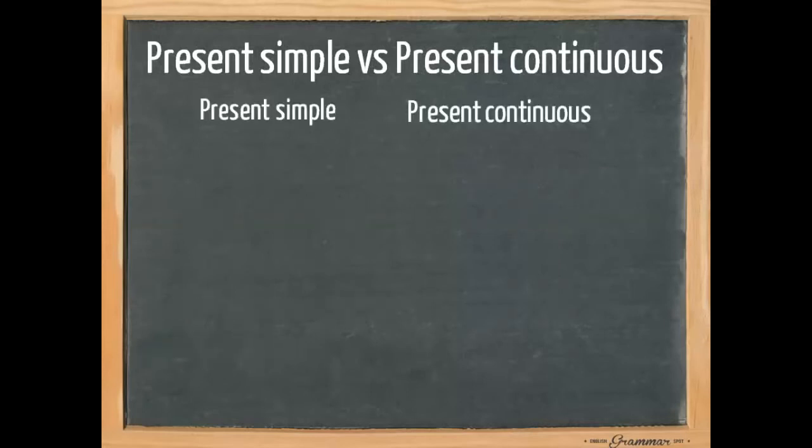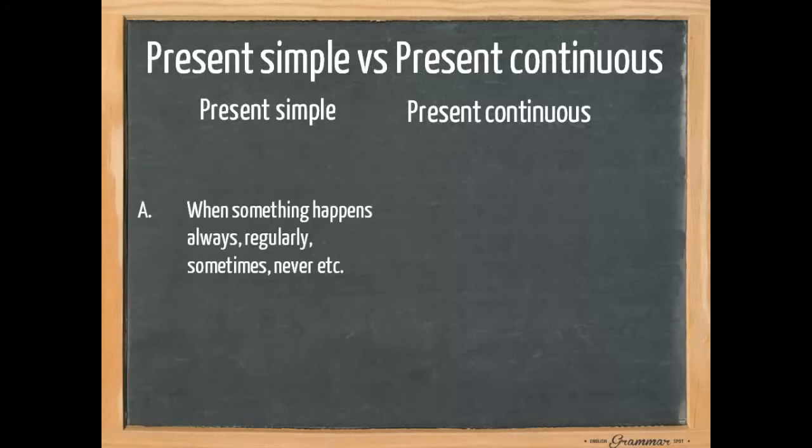Now when do we use a present simple? We use a present simple when something happens always, regularly, sometimes and never.